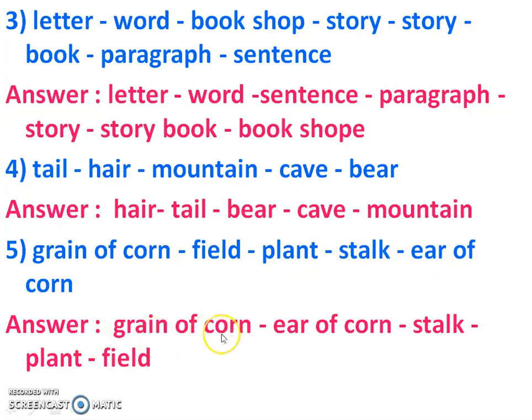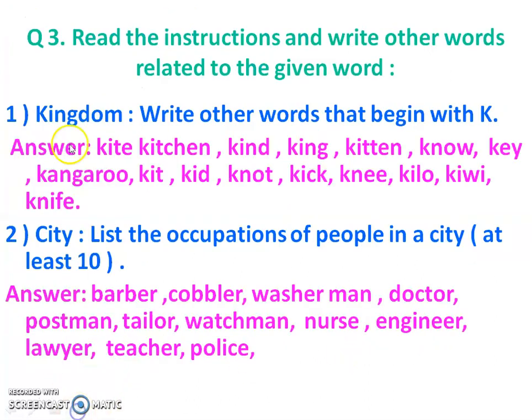Number three: letter, word, bookshop, story, story book, paragraph, sentence. The smallest is letter, so first letter, then word, then sentence, then paragraph, then story, then storybook, and then bookshop. Number four: tell, hair, mountain, cave, bear. Answer: first hair, then tell, then bear, then cave, then mountain. Number five: grain of corn, field, plant, stalk, ear of corn. Answer: first grain of corn, then ear of corn, then stalk, then plant, and then field.